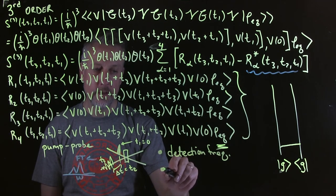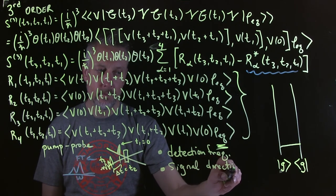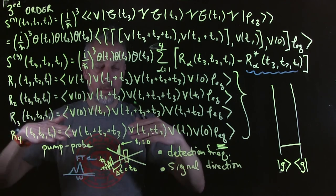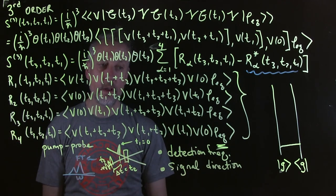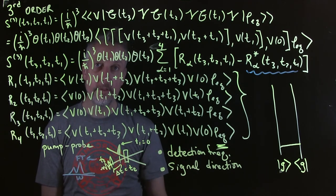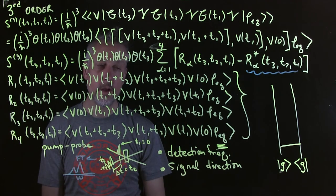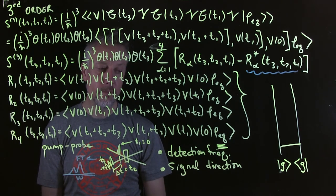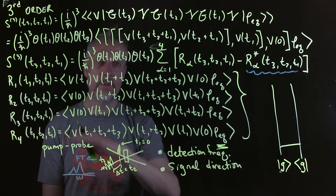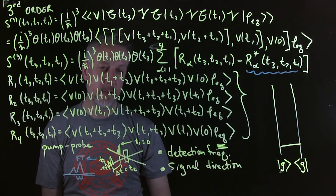And the second option is you can check the signal direction. It turns out if you use multiple fields with different angles relative to each other, then the different pathways will actually, many of them will go in different physical directions in space. So you simply move your detector to the one that you want to measure. And that's actually been one of the most useful ways that people have been able to measure and understand nonlinear spectroscopy, even though it seems hopeless because there's so many terms and they seem like they're all overlapping.